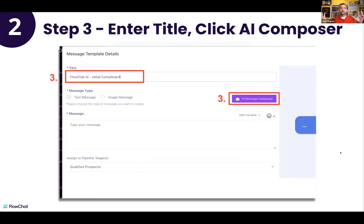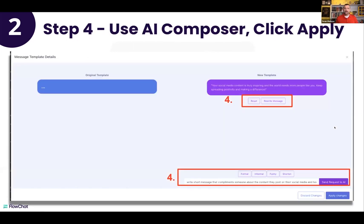Once you're in the template builder, look for the purple button on the right-hand side. Enter your title first on your new message template, then click that purple AI Composer button. It will take you to a window — if you've never written a message before it will show three dots; if you have an existing message, your original template appears on the left and the new AI-generated one appears on the right. You can use Reset or Rewrite Message with one click.